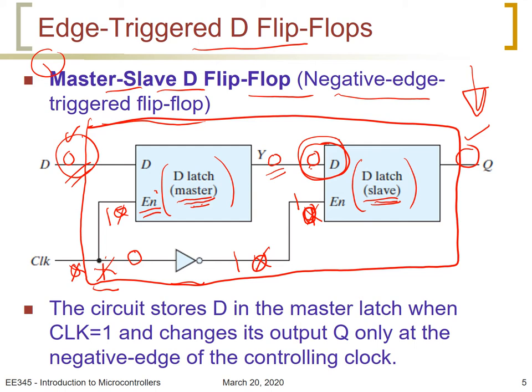This flip-flop is called master-slave because the slave is not directly affected by input D — the slave is affected only by the master. So the master drives the slave. This flip-flop is called the master-slave flip-flop, or D negative edge-triggered flip-flop, which is very important.